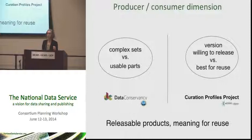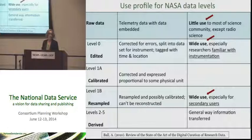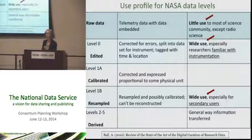Versioning — which we've heard about several times today — is very important and has everything to do with reuse and meaning for reuse. Many of you are probably familiar with the NASA data levels. I understand there's a new paper coming out of NSIDC where they've extended these levels to think about further curation down the way. We know quite a bit about which levels can get used by which communities — some get little use by very particular communities, some get wide use by people who know the instrumentation, and other variations can get quite wide use from secondary users.